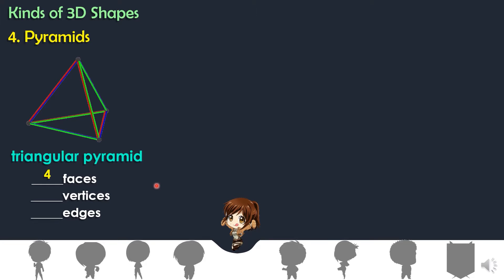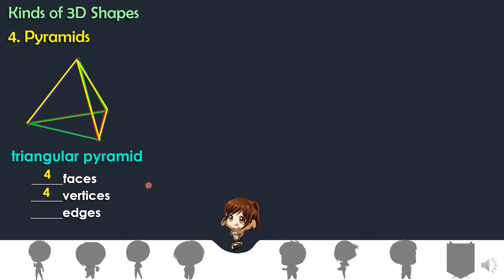How about the vertices, or corners? Let us count: one, two, three, four. Triangular pyramid has four vertices. How about the edges or sides? Let us count: one, two, three, four, five, six. Triangular pyramid has six edges.